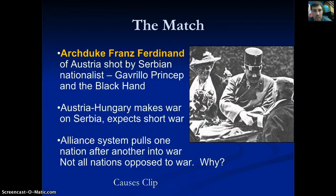What actually starts the war is the assassination of Archduke Franz Ferdinand of Austria, shot by Serbian nationalist Gavrilo Princip, a member of a terrorist group called the Black Hand. Austria-Hungary declares war on Serbia, expecting a short war — Serbia is a small country while Austria-Hungary is a massive empire — expecting a quick victory.